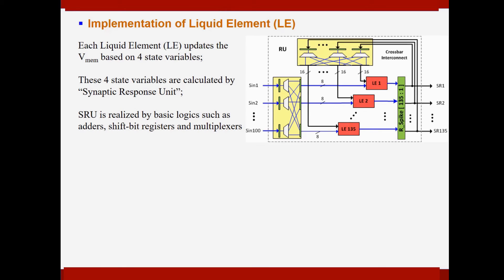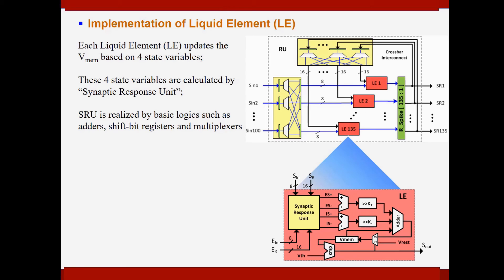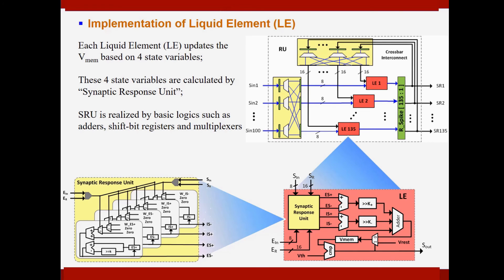Now it's time to talk about the design details of the digital liquid neuron, namely the liquid element. According to the algorithm, each liquid element updates the membrane potential based on the four state variables. And these four state variables are calculated by a functional block called the synaptic response unit. This unit is realized by basic logics such as adders, shift-bit registers, and multiplexers. So this is really efficient thanks to a hardware-friendly algorithm we are utilizing in this work.